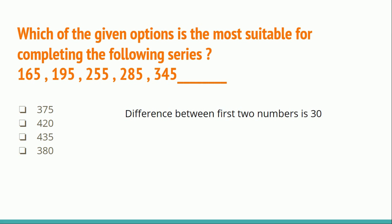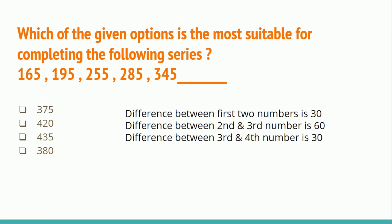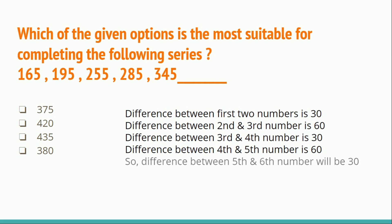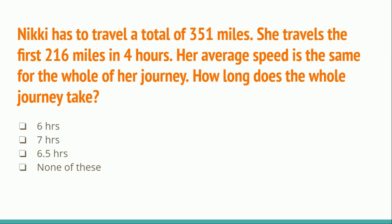The difference between the first and second numbers is 30; between the second and third is 60; between the third and fourth is 30; between the fourth and fifth is 60. The pattern alternates between differences of 30 and 60. So the next difference will be 30, giving 345 + 30 = 375. The correct answer is 375.